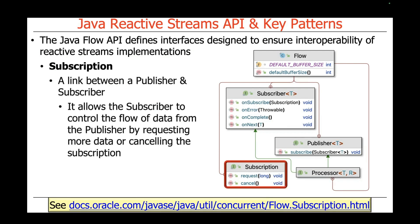The fourth and final piece is a Subscription, which is basically the link between a publisher and a subscriber. It allows the subscriber to control the flow of data from the publisher by requesting more data or canceling a subscription. Subscriptions don't have to be used at all, but when you use them, they're a way to exert back pressure between back-pressure-aware publishers and subscribers.